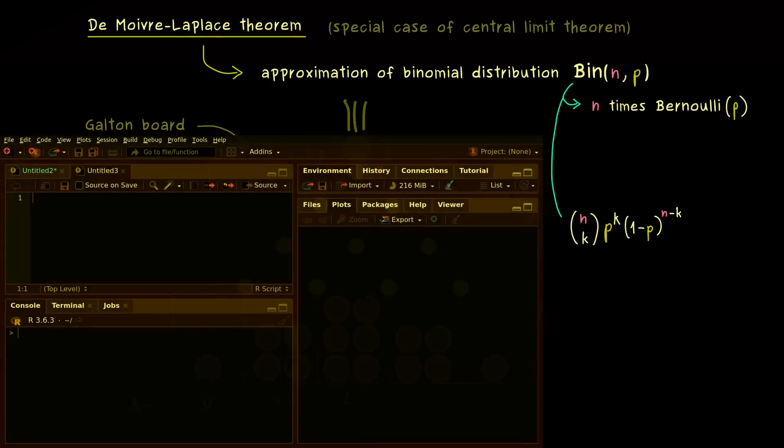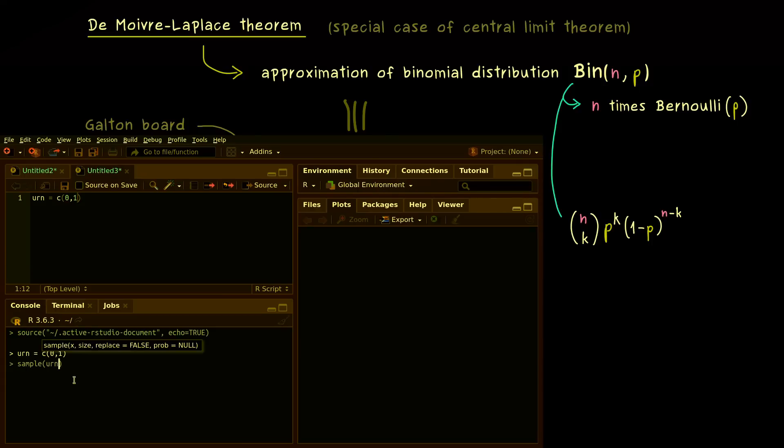And in order to see this more concretely, let's go to R studio again. There let's simulate our Bernoulli experiment with p is equal to 1 half. This means we can just define an urn that has a 0 and a 1 in it. And now sample urn will give us 0 or 1 with probability 1 half.